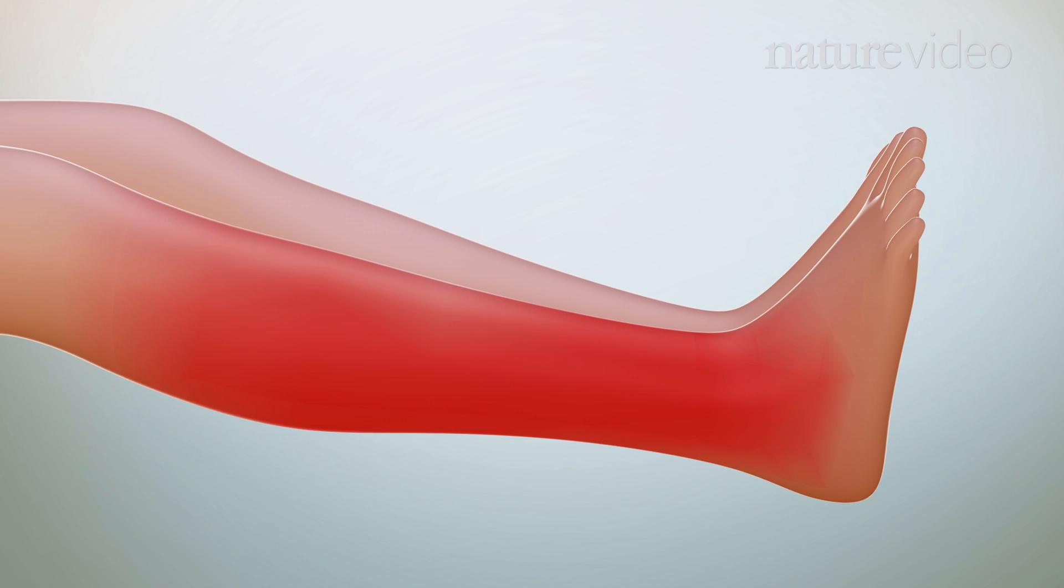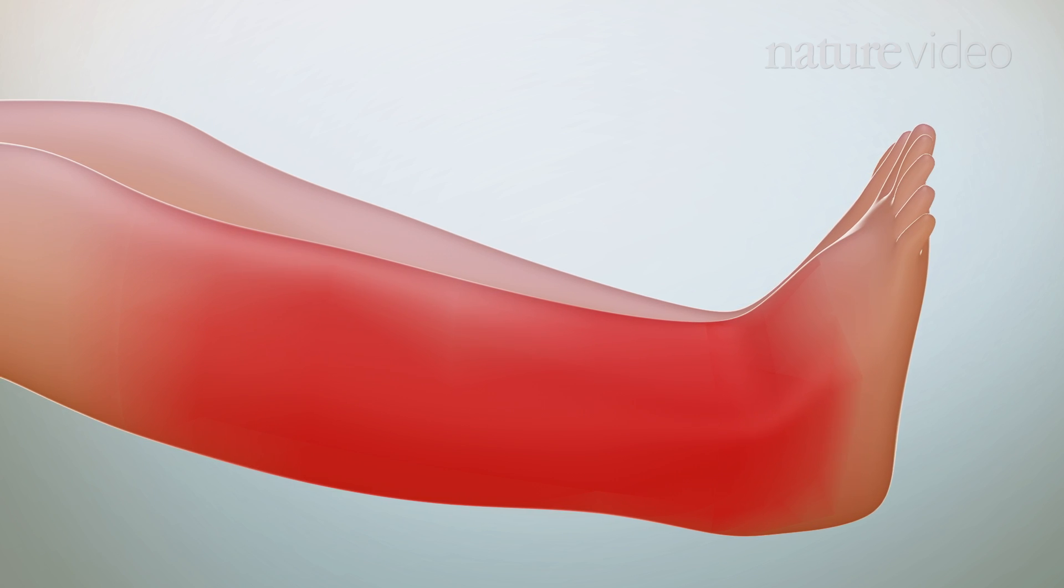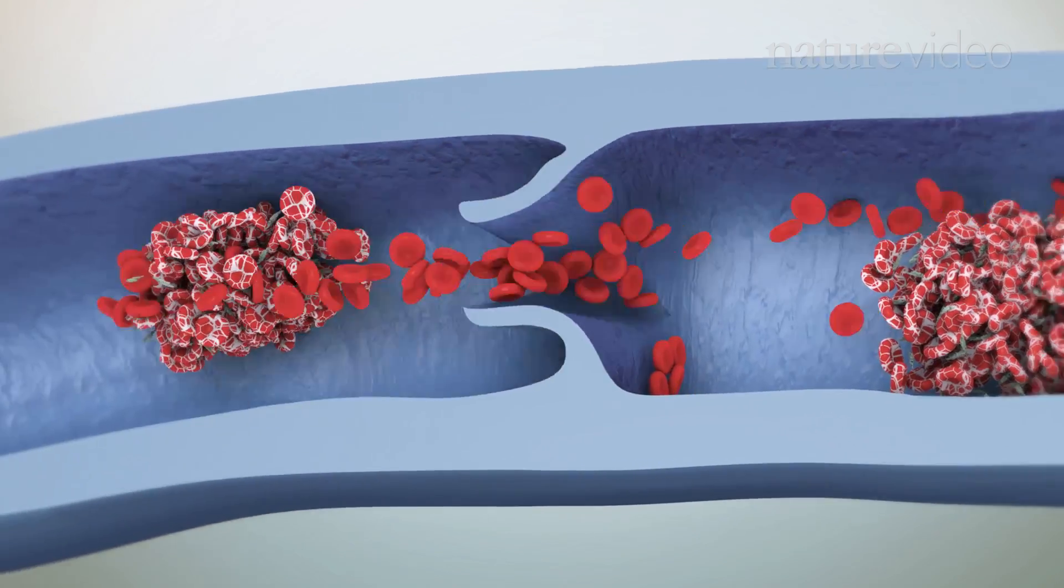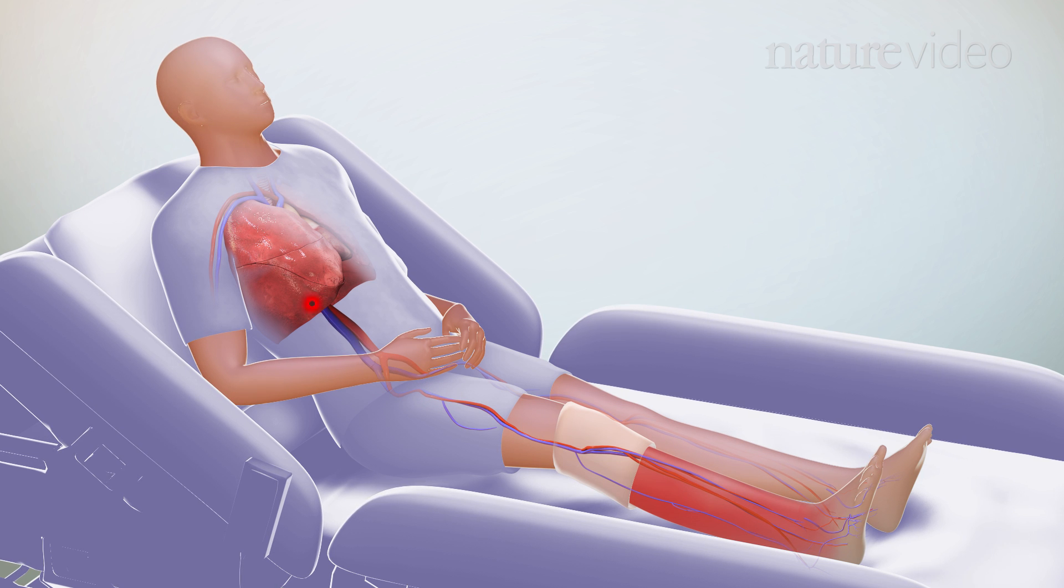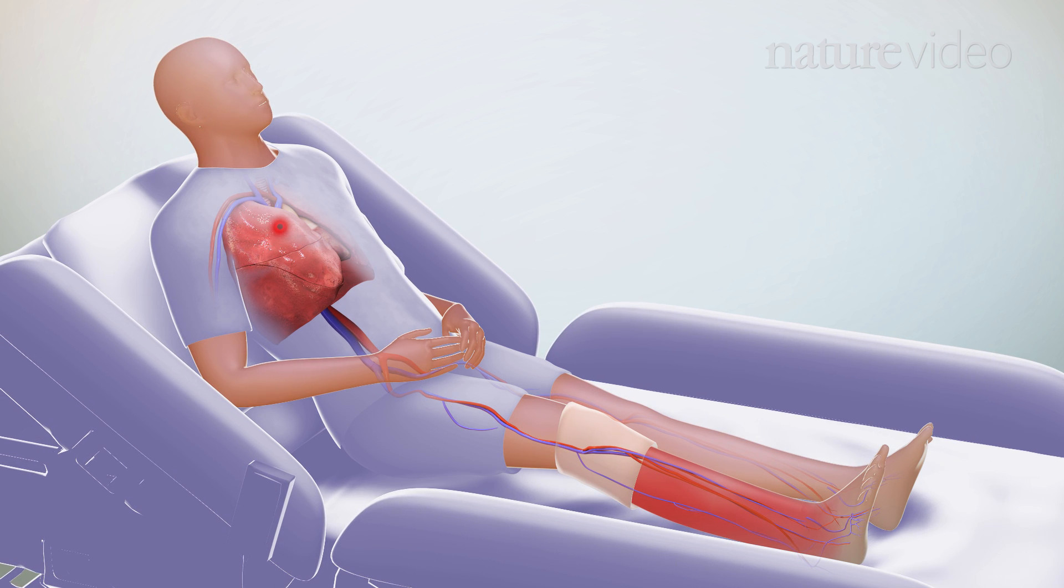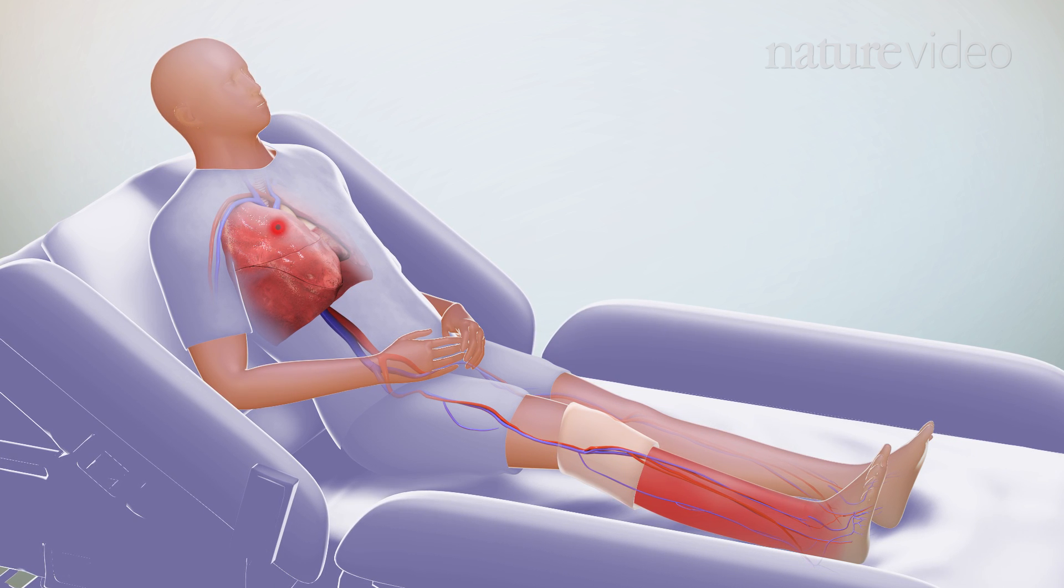The clot can cause pain and swelling. If part of the clot breaks off into the bloodstream, it can end up lodging in the lungs. This is called a pulmonary embolism and can be life-threatening.